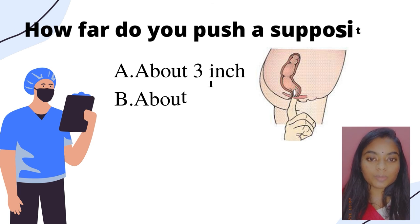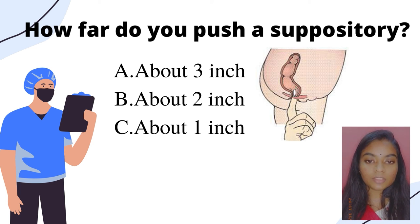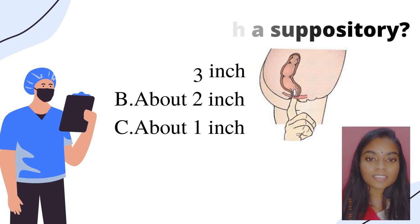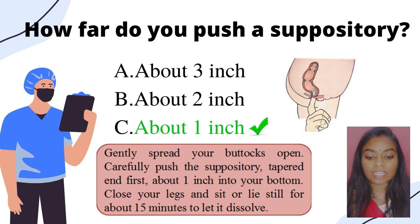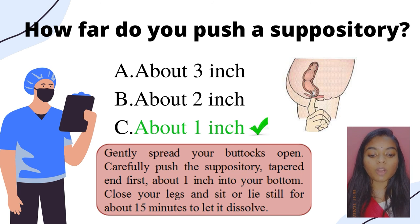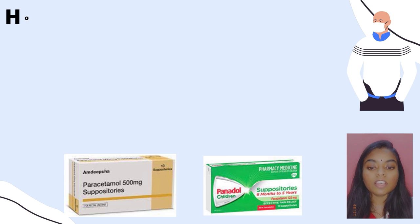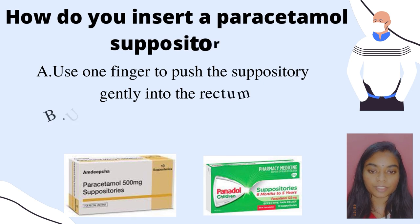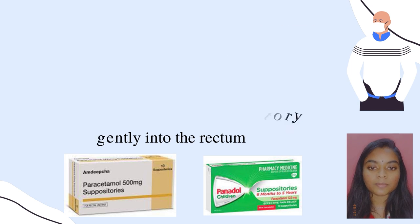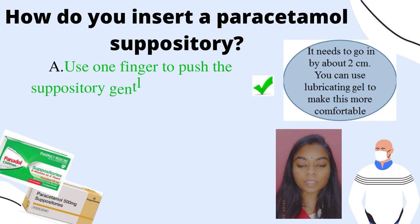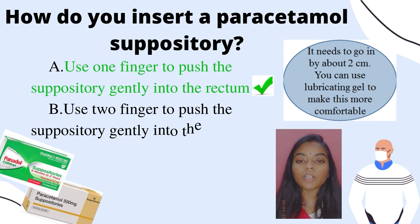The third question is: how far do you push a suppository? A — about 3 inches; B — about 2 inches; C — about 1 inch. The answer is C — about 1 inch. The method is: gently spread your buttocks open, carefully push the suppository pointed end first about 1 inch into your bottom, close your legs and sit or lie still for about 15 minutes to let it dissolve. The fourth question is: how do you insert a Paracetamol suppository? A — use 1 finger to push the suppository gently into the rectum; B — use 2 fingers. The answer is A — use 1 finger, as it needs to go in about 2 cm. You can use lubricating gel to make this more comfortable, available at pharmacies.